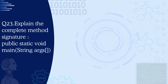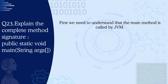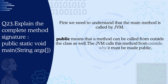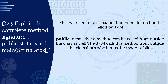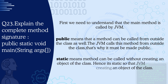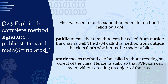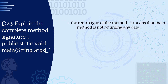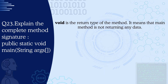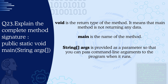Question 23: Explain the complete method signature — public static void main(String[] args). The main method is called by JVM to start the program. Public means the method can be called from outside the class — the JVM calls it from outside, so it must be public. Static means the method can be called without creating an object of the class. Void is the return type, meaning the main method returns no data. String[] args is the parameter to pass command-line arguments to the program.